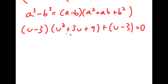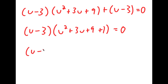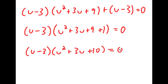Now, because both of these terms have a common factor of u minus 3, if I factor out u minus 3, I get u minus 3 times u squared plus 3u plus 9 plus 1 is equal to 0. And 9 plus 1 is 10, so I get u minus 3 times u squared plus 3u plus 10 is equal to 0.